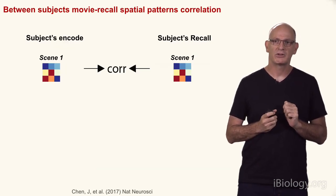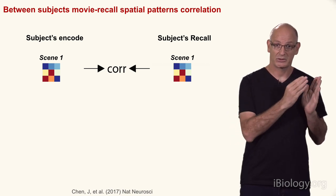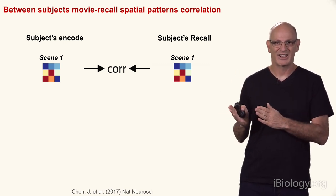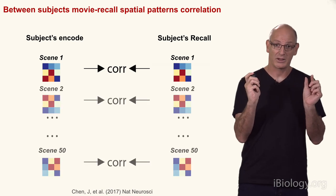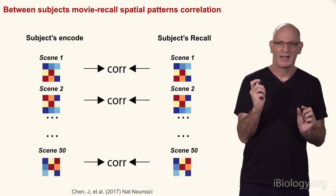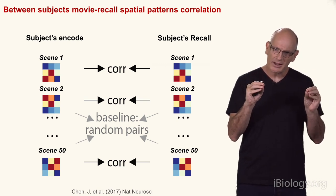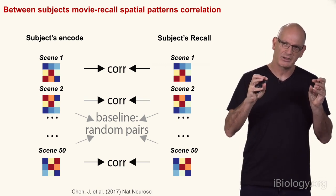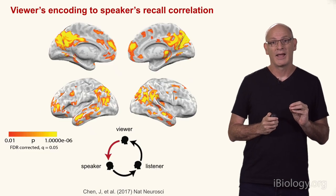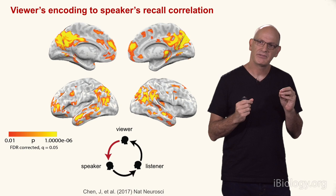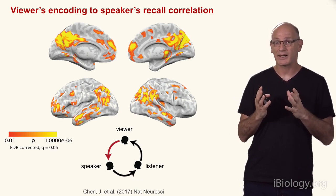For example, we can look at a subject encoding versus the same subject recalling in the dark scanner — on the left when he's seeing the movie, on the right when he's recalling it. You can see whether the brain pattern in scene one is correlated, and we do this for all 50 scenes. This correlation has to be stronger than the correlation between different non-matching scenes. We want a particular activation that's particular to this moment in the movie, in your brain area when you're watching and encoding. And we can do this analysis across the entire brain.